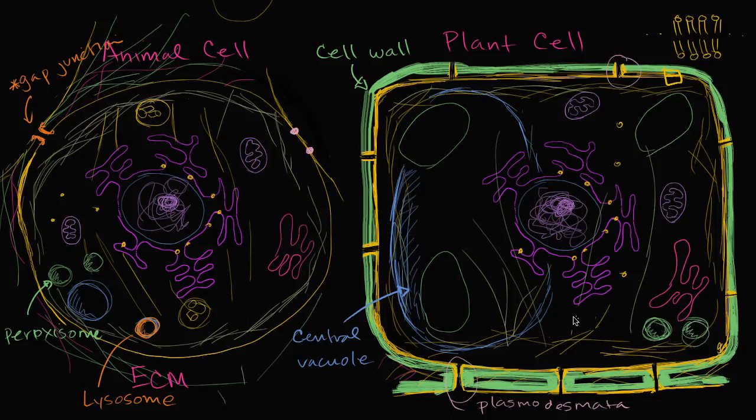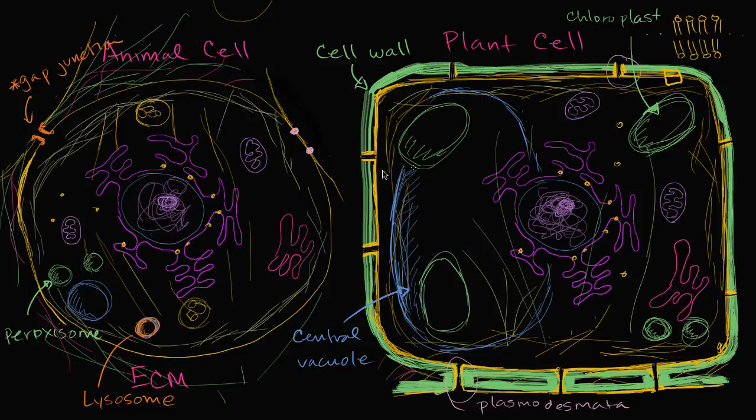Now going back to differences between the plant cell and the animal cell, a key difference is going to be these characters right over here. These are chloroplasts. This is where photosynthesis takes place and clearly we're going to show it in the plant cell. This is how they are able to create essentially food or fixed carbon based on light energy. So chloroplast. Chloroplast right over there. We do not see that in the animal cell.